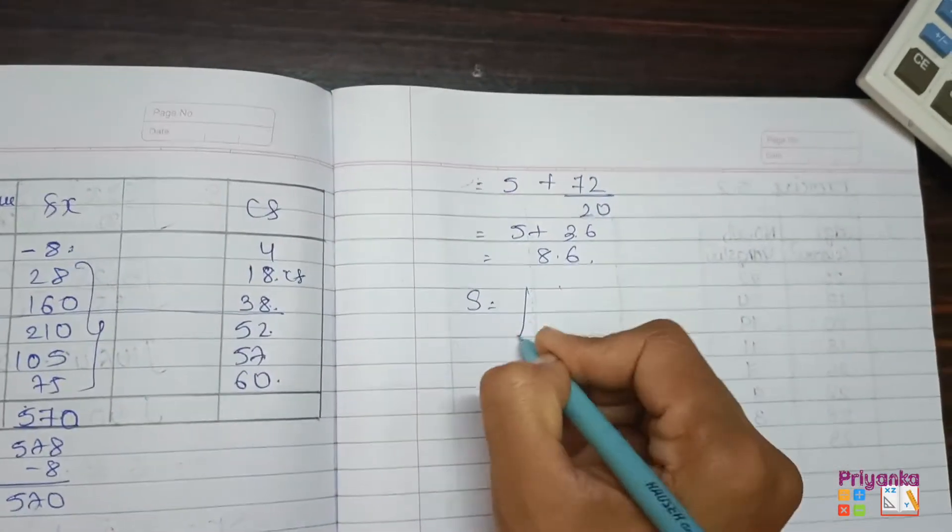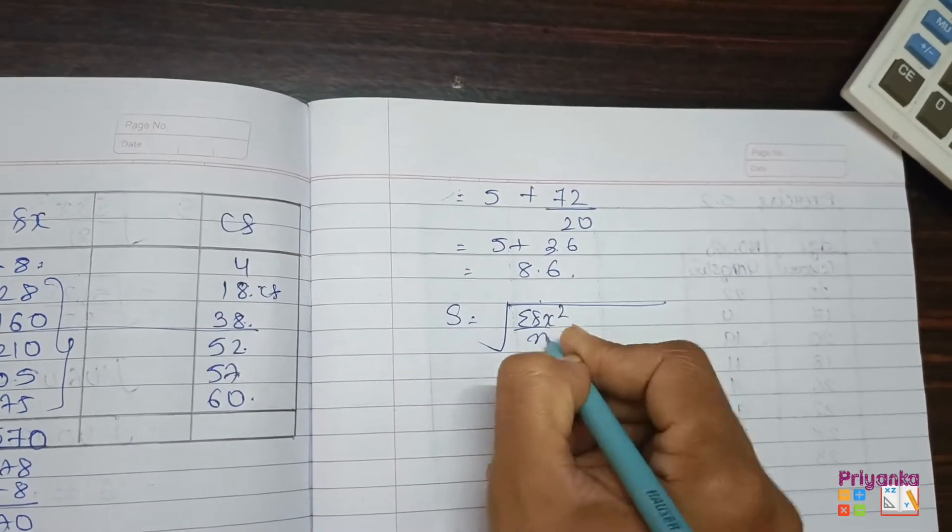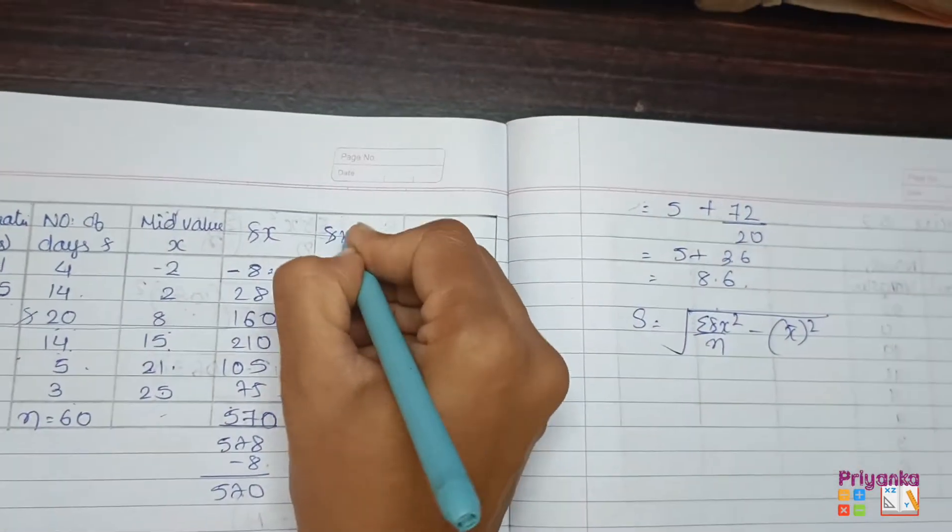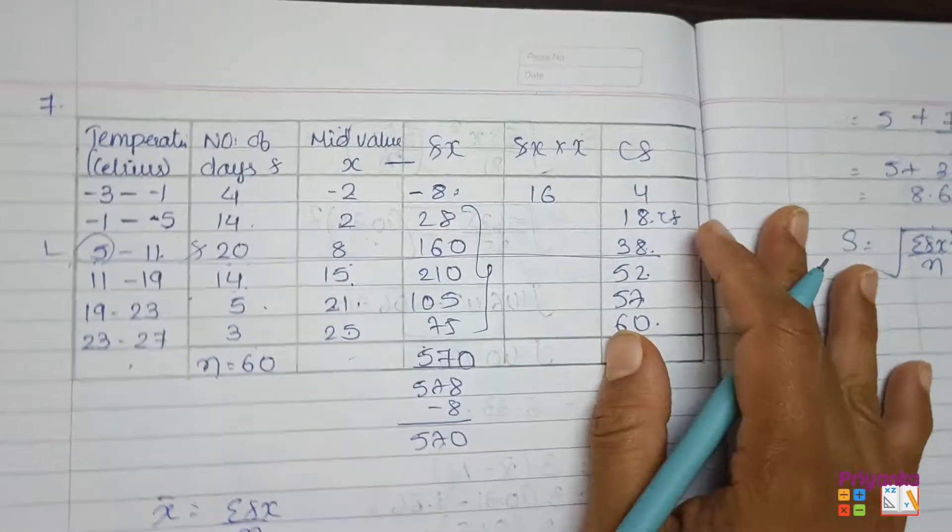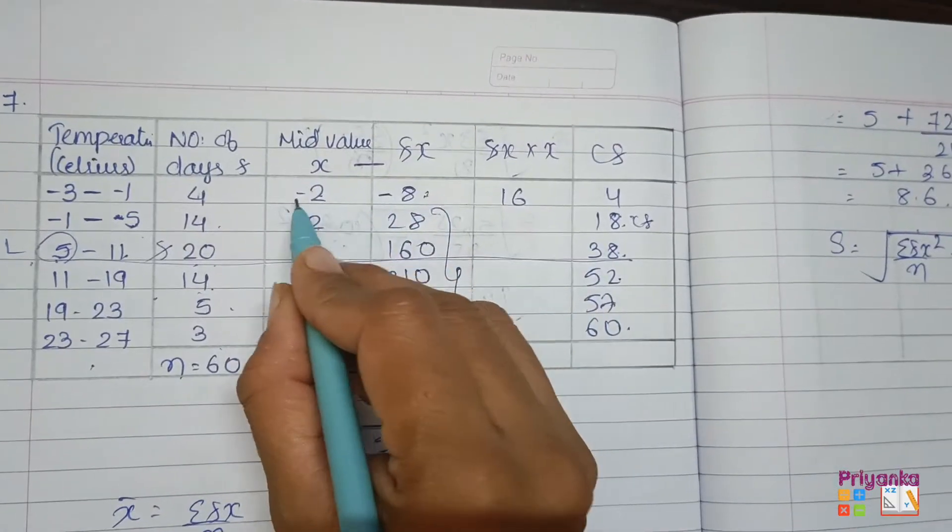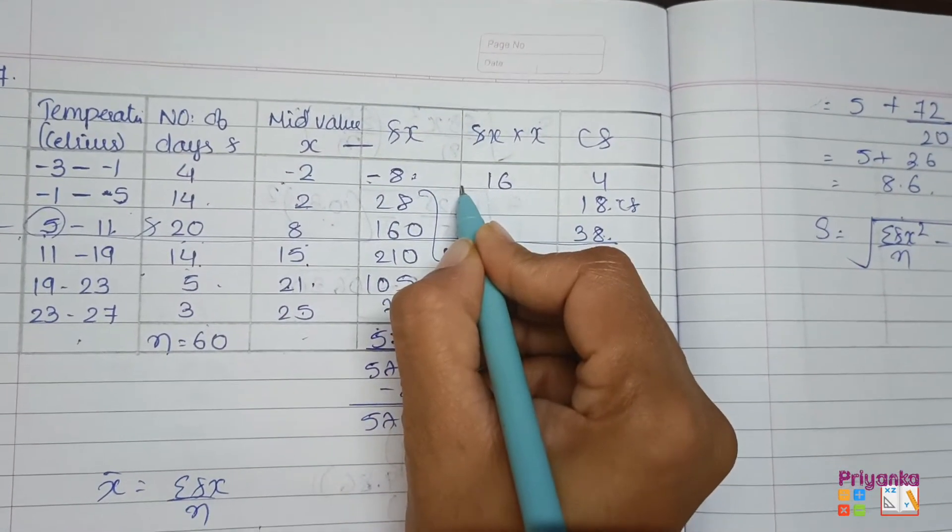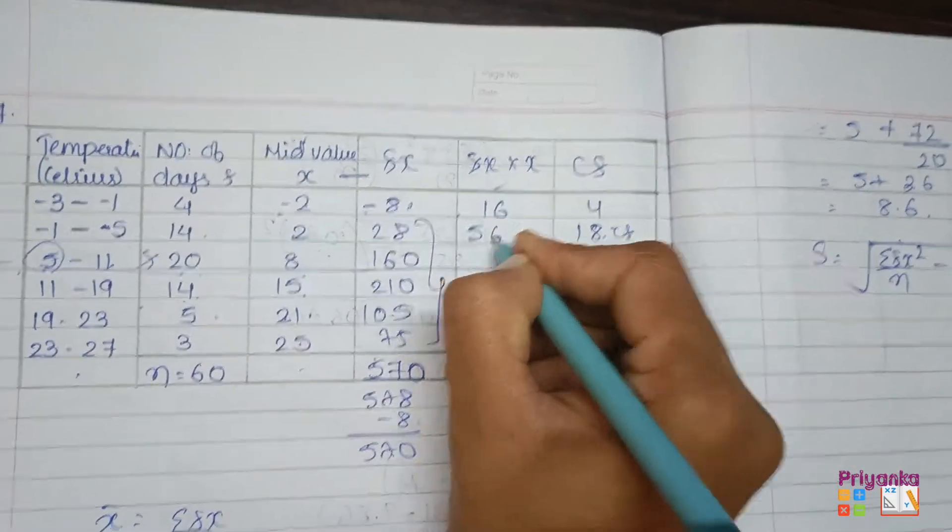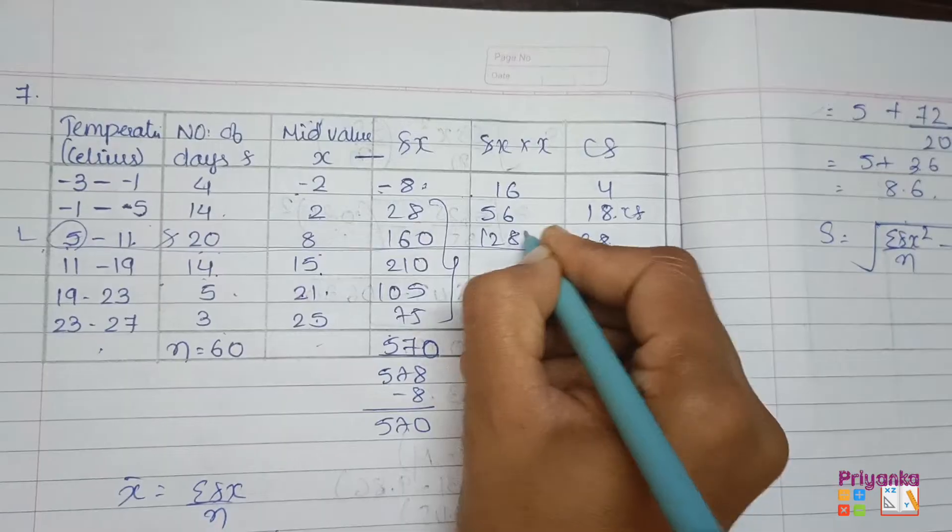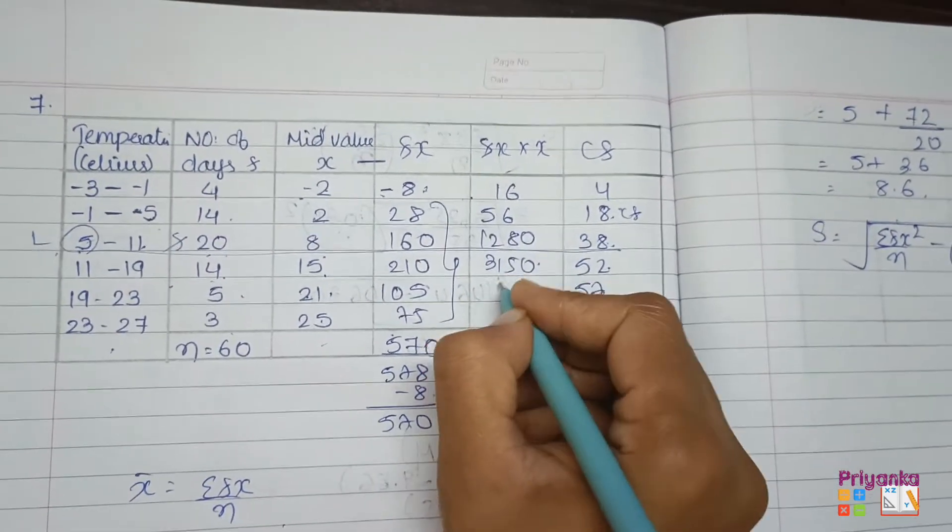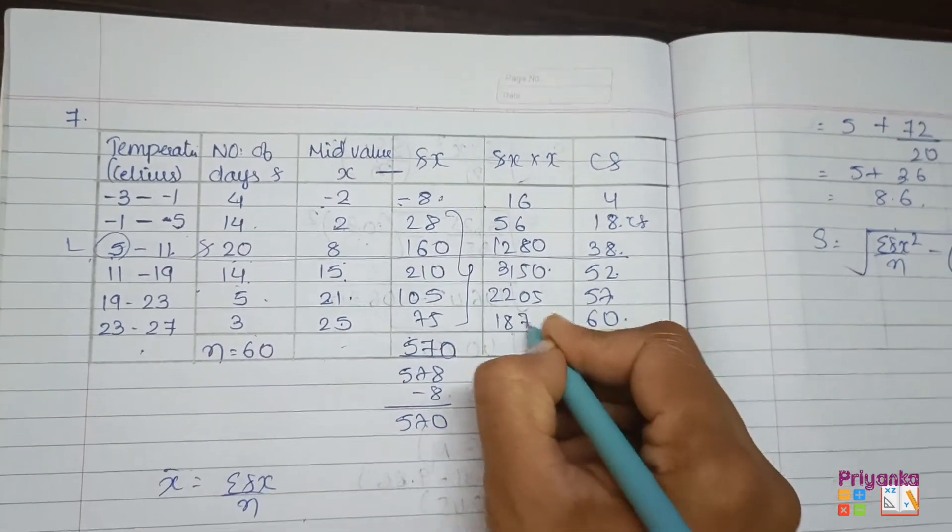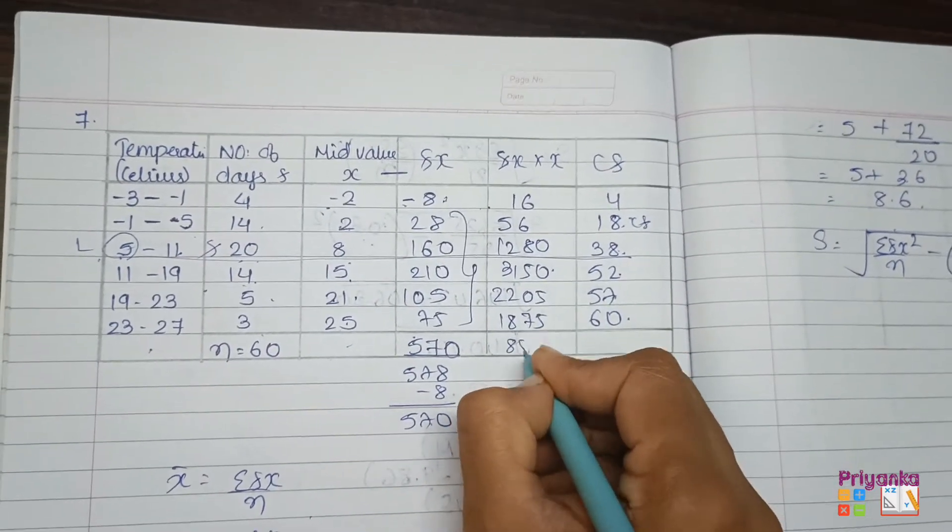The next we need is standard deviation: sigma fx square upon n minus mean square. I am taking this time directly. So here we will find out fx multiplied by x column, that is these two columns multiplied. Here minus minus will turn into plus, so here you will not have minus sign. 2 into 28 is 56, and just continue with your calculator. Here I am writing directly because this is the last question and by the time I hope everybody has understood how to solve.